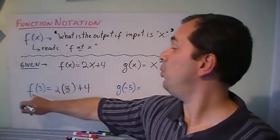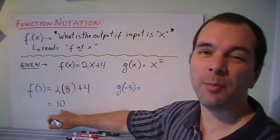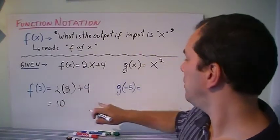In other words, what is the output when x is equal to 3? Well the output is going to be 10. And the output is usually y, right? What about this one?